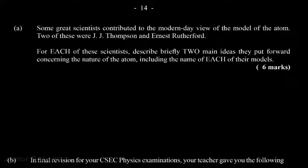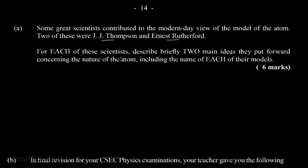So it says here that some great scientists contributed to the modern-day view of the model of the atom. Two of these scientists were J.J. Thompson and Ernest Rutherford. For each of these scientists, describe briefly two main ideas they put forward concerning the nature of the atom, including the name of each of their models. So if we first consider J.J. Thompson, which is Joseph John Thompson.